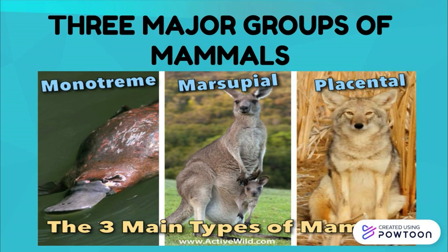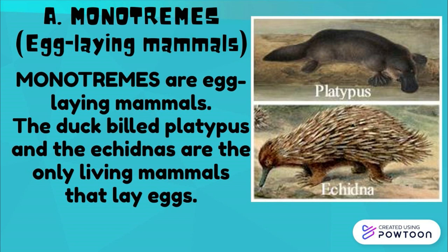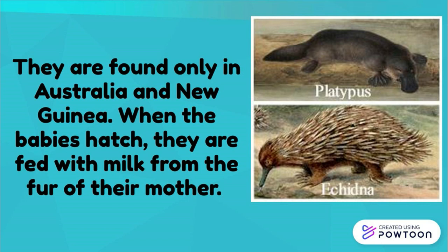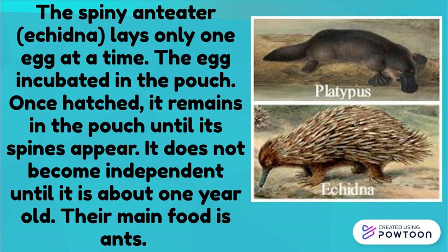The three major groups of mammals begin with monotremes, or egg-laying mammals. The duck-billed platypus and echidnas are the only living mammals that lay eggs. They are expert swimmers and divers and can stay underwater for several minutes. They are strong burrowers, making two burrows — one for general living quarters and another for breeding. They are found only in Australia and New Guinea. When the babies hatch, they are fed milk from the fur of their mother. The spiny anteater, or echidna, lays only one egg at a time. The egg is incubated in the pouch, and once hatched, it remains in the pouch until its spines appear. It does not become independent until about one year old, and its main food is ants.